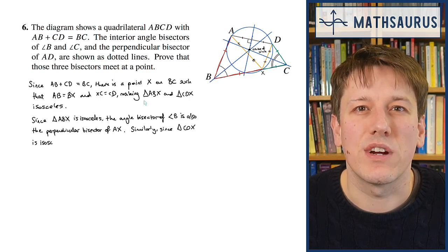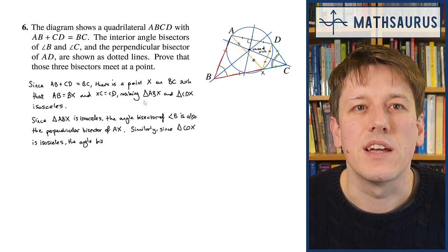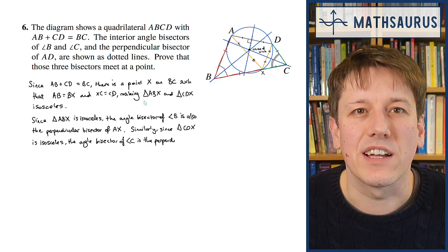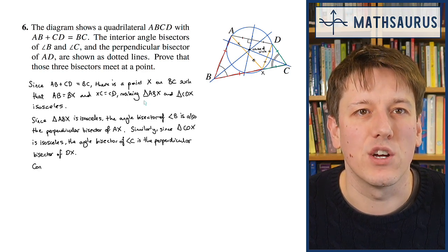Similarly, since triangle CDX is isosceles, the angle bisector of angle C is the perpendicular bisector of DX.